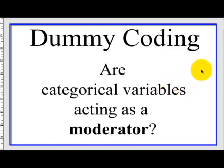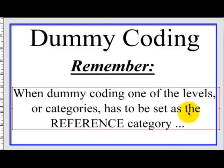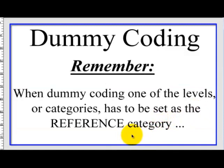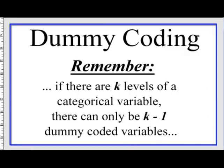Another way to look at this is: are any of the categorical variables acting as a moderator? Are they influencing the DV? When you're dummy coding, you've got to pick one of the levels or one of the categories of your categorical IV. It has to be a reference category — it's going to be left out of the data set because the results will be compared to that reference category. The number of dummy codes will be one less than the number of levels of that categorical variable.